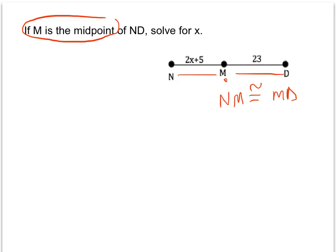We're going to use that information to set up an equation and solve for x. If we know that those two segments are equal, then we can set up an equation 2x plus 5 equals 23. And you'll see that whenever we're asked to solve for x, usually we're going to set up an equation and solve with algebra.